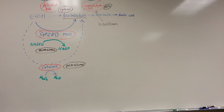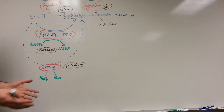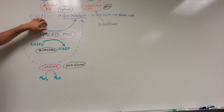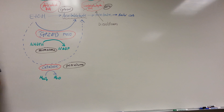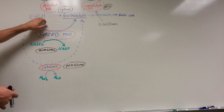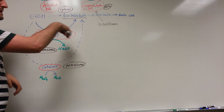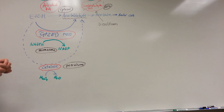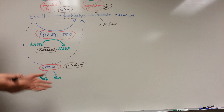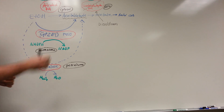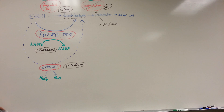Why do we even have this alcohol breakdown system? The body actually produces small amounts of alcohol naturally during fatty acid synthesis and in the biosynthesis of bile acids. So the body needs this alcohol breakdown system to convert that alcohol back into a usable form of energy. It wasn't invented so we could drink at a bar — our body produces small amounts of alcohol and thus needs to break it down.